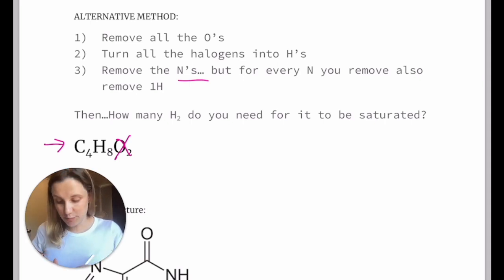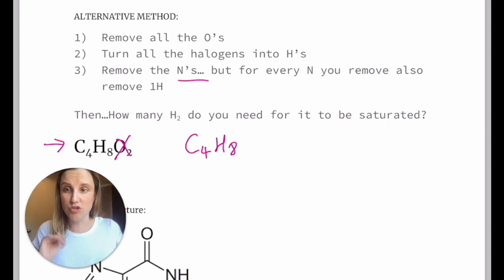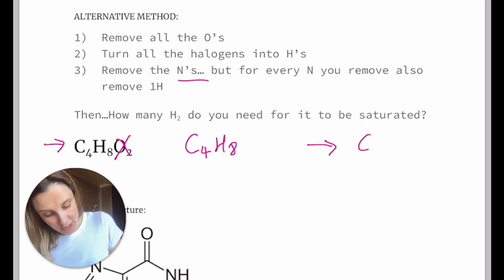So when we've got to this point here, what we've essentially got is you've turned it into a hydrocarbon. You should only have carbons and hydrogens left at this point in the process. And then all I'm doing is calculating how many H2s I need for it to form the saturated alkane. So if I've got a saturated alkane with four carbons, then 2n plus 2 means that I should have H10.